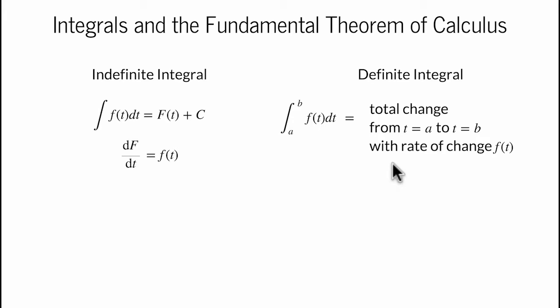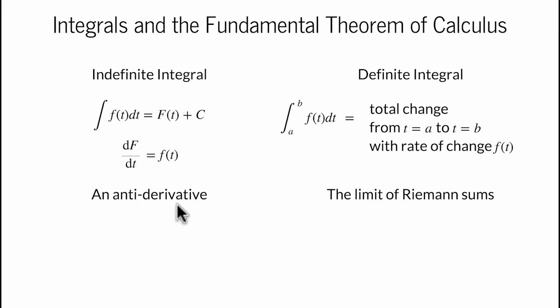The integrals are defined in quite different ways. The indefinite integral is defined in terms of an antiderivative — the derivative of big F is little f, and to get big F from little f we have to undo the differentiation. The definite integral, on the other hand, is defined in terms of a limit of Riemann sums: we chop up the interval a to b into small subintervals to estimate the total change, then take the limit as the number of subintervals goes to infinity.